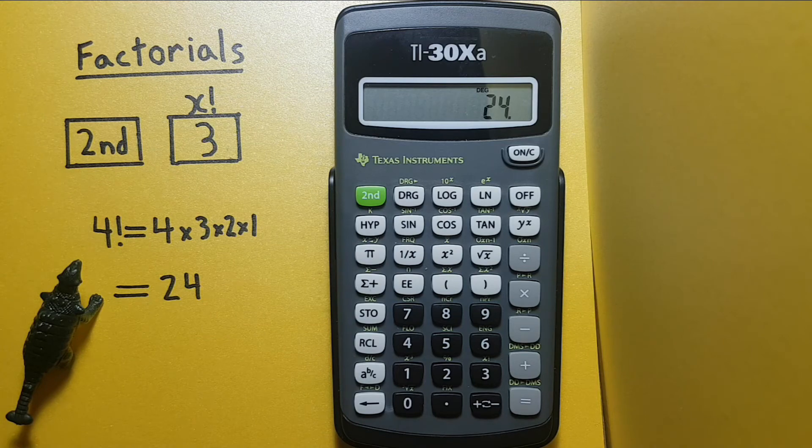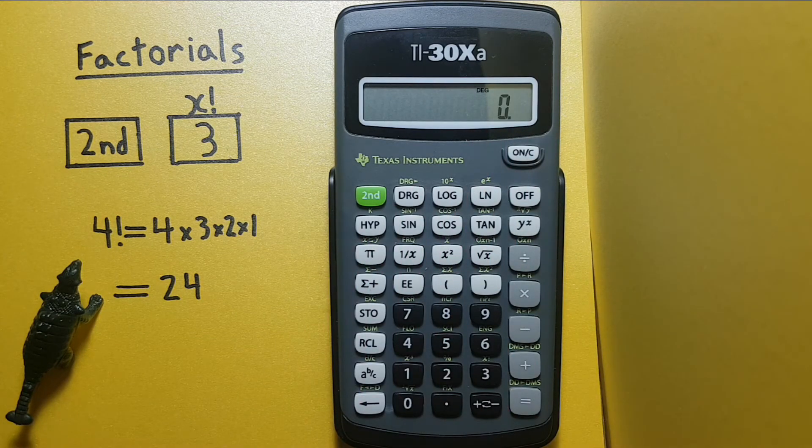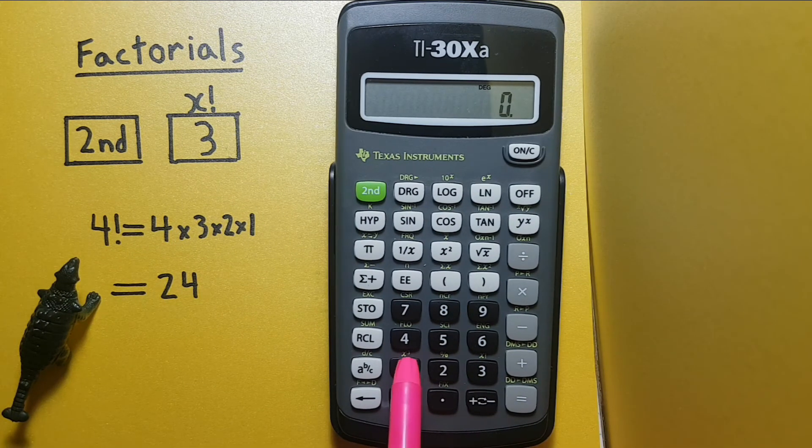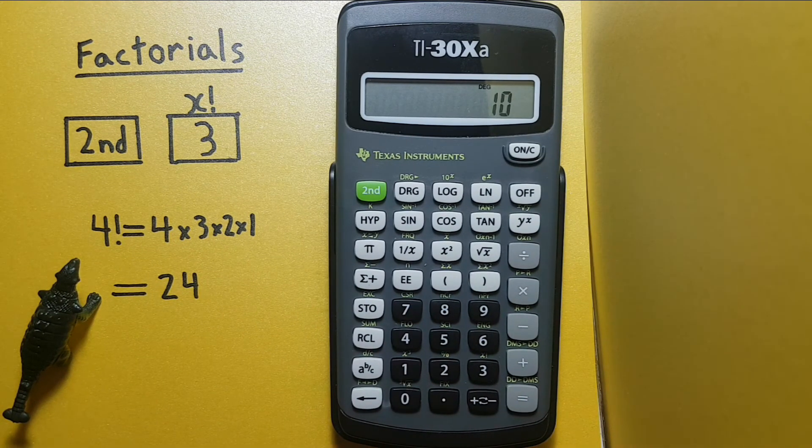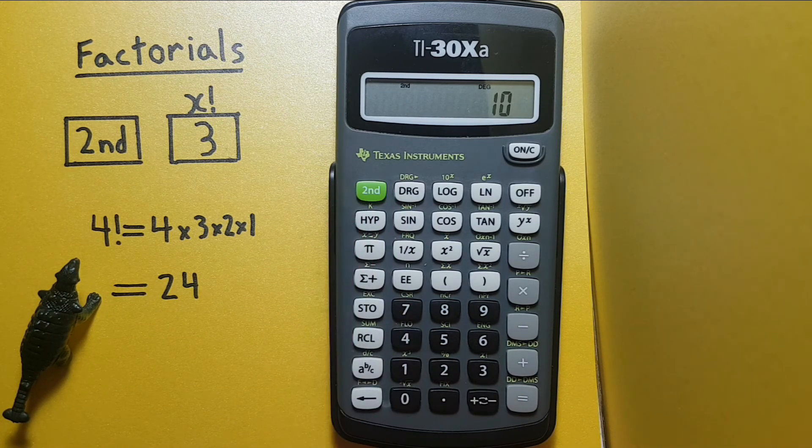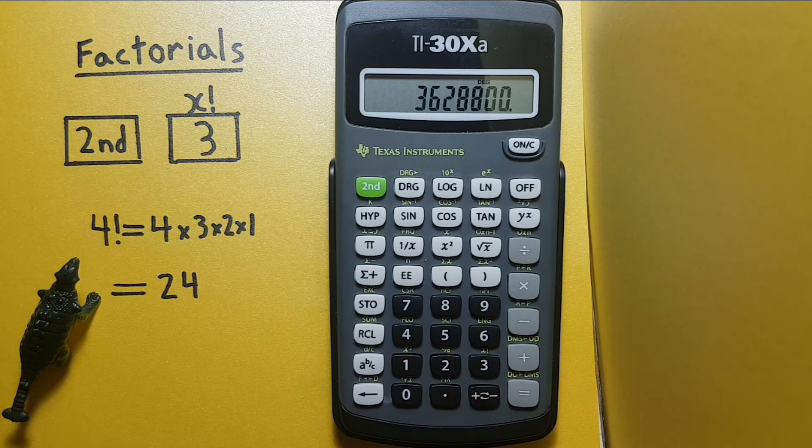Let's try another example. If we put 10 on the screen and then go second function three we get the result.